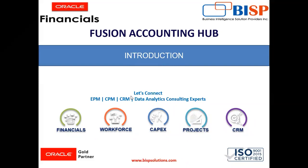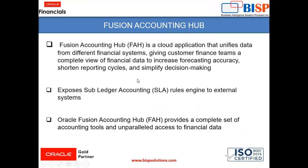Hello everyone, I am Harshita and today's topic is Introduction to Fusion Accounting Hub, also known as FAH. Fusion Accounting Hub is a cloud application that unifies data from different financial systems. It helps the finance team get a complete view of financial data, increasing forecasting accuracy, shortening the reporting cycle, and simplifying decision making. It exposes the sub-ledger accounting rules engine to external systems and provides a complete set of accounting tools with unparalleled access to financial data.